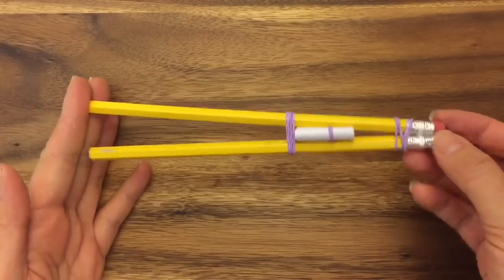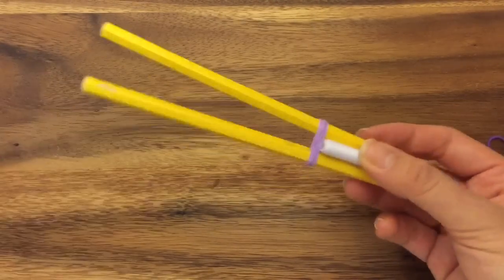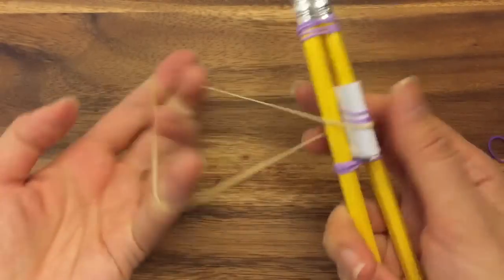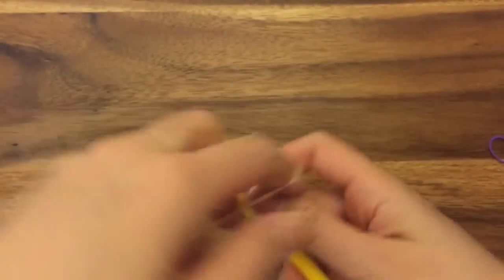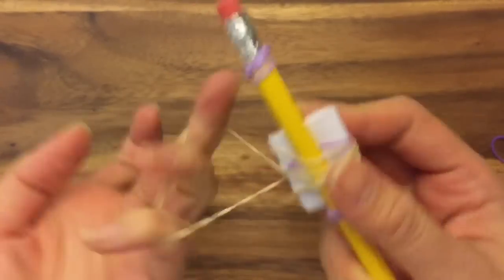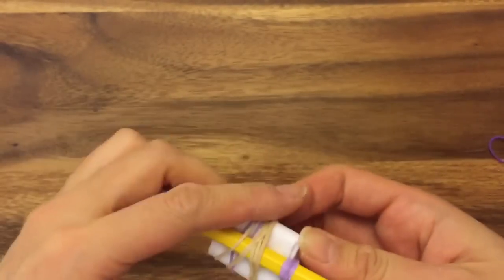You already have your pencil loom, but this part is a little slippery. So it can slip out. And that's when this rubber band comes into play. You could just take this big rubber band and wrap it around over here. And depending on how big this rubber band is, you just want to wrap it enough so it's secure.